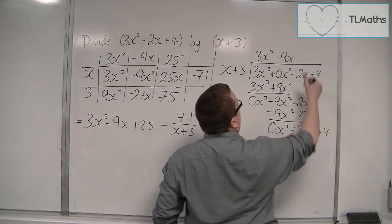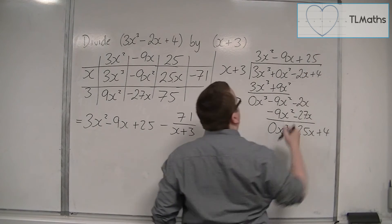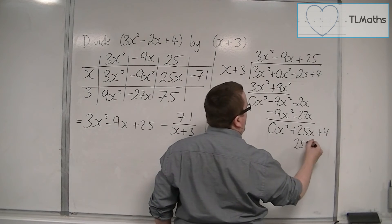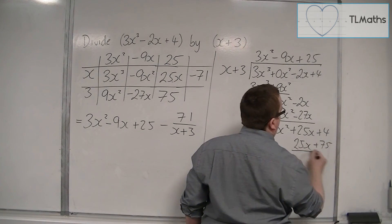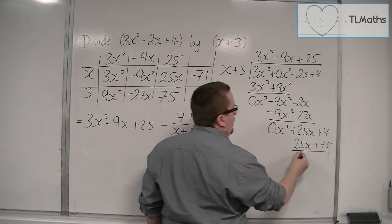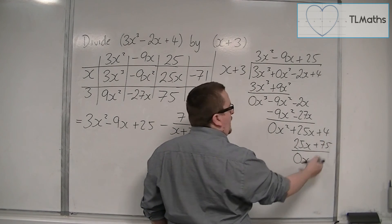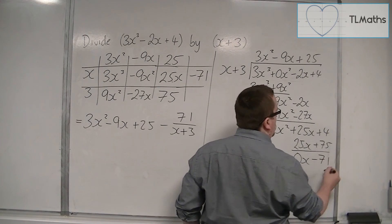x into 25x goes 25. 25 times these two terms is 25x plus 75. Draw a line. Perform a subtraction. I get 0x, and 4 take away 75 is minus 71.